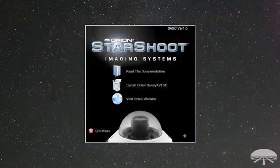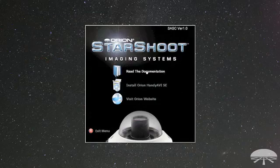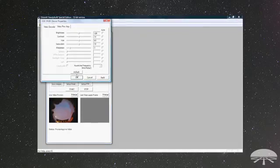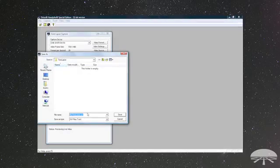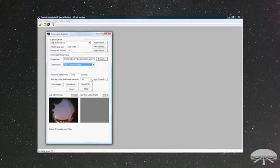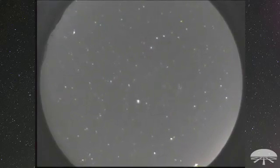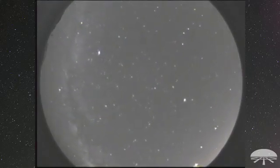The Orion Handy AVI Special Edition software can be configured to capture a single frame per selected time increment. This is also known as time-lapse. For instance, the camera can have a maximum exposure of four seconds. Therefore, setting the time-lapse at one frame every four seconds will result in one unique frame every fourth second.